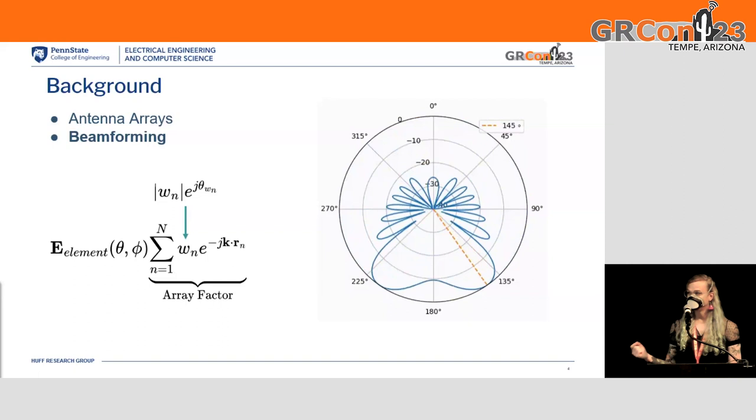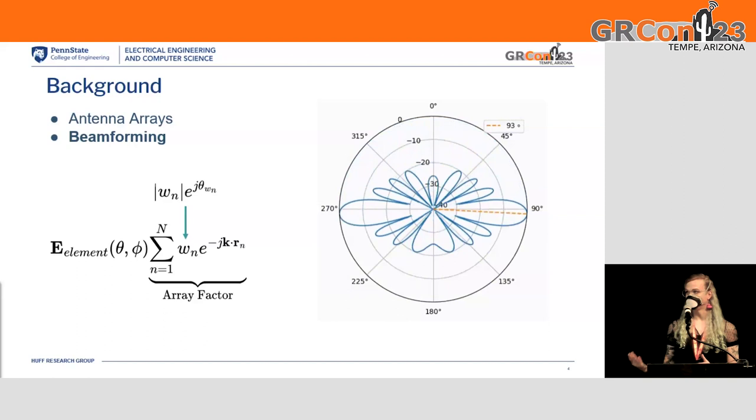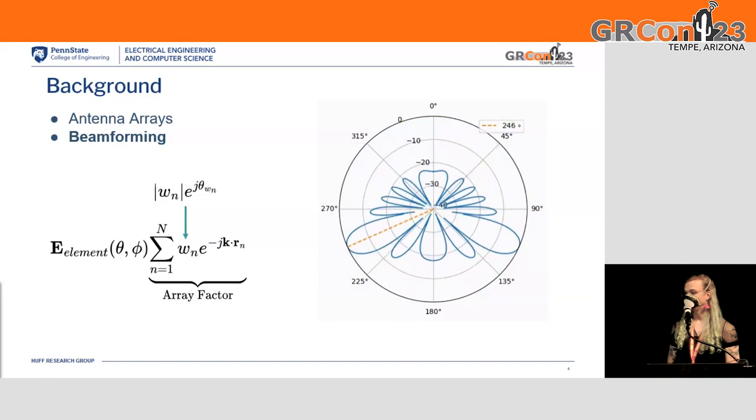Now, if you introduce a complex weight into this equation, you can do things like beam steering. You can direct your beam into any kind of direction. This weight is just a complex number that you apply to each individual element, and you can get it to do cool things like beam steering.